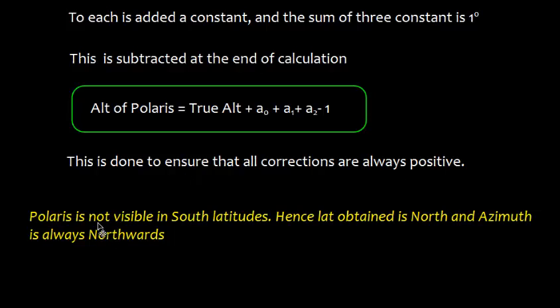It should also be noted that Polaris is not visible in south latitudes. Hence, latitude obtained is north, and azimuth is always northwards.